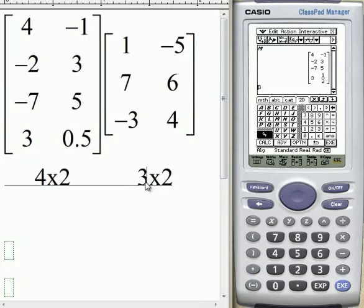Now, for multiplication to exist, for matrix multiplication to exist, we want these two numbers, so the second number of the first matrix and the first number of the second matrix to be the same. In this question, they're actually not the same. So matrix multiplication for this question is not defined, so we can't do it.